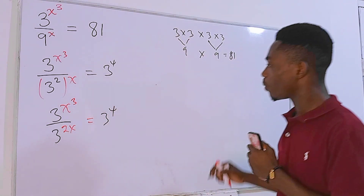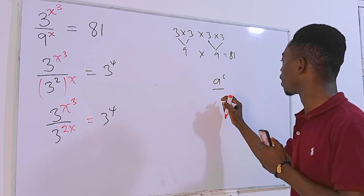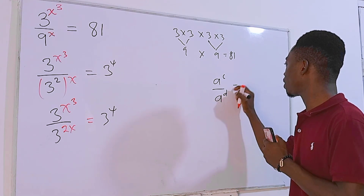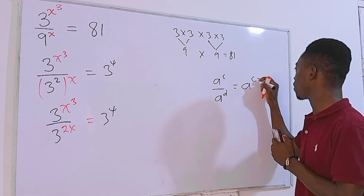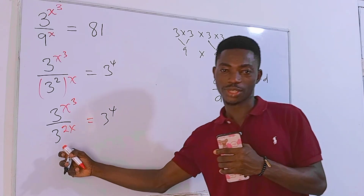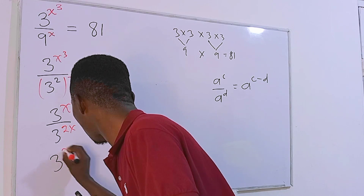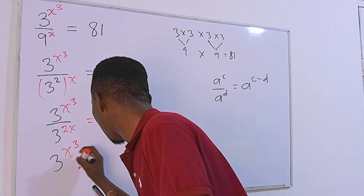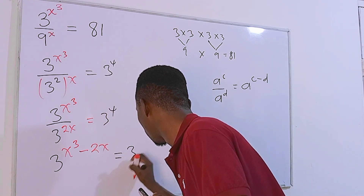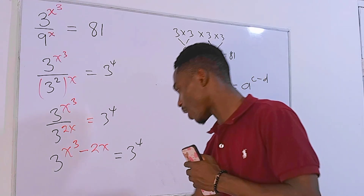We can apply the power rule: a to the power c divided by a to the power d equals a to the power c minus d. Applying this to the left-hand side, we get 3 to the power (x cubed minus 2x), and this equals 3 to the fourth power.